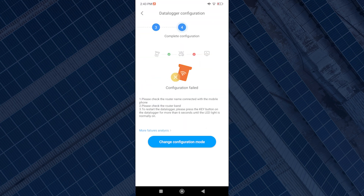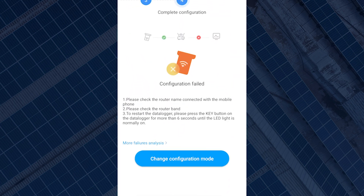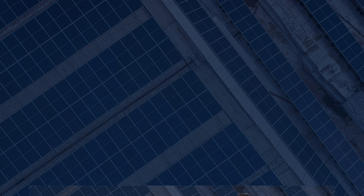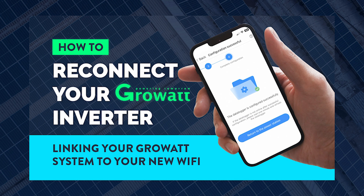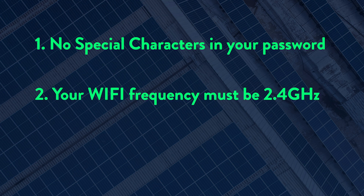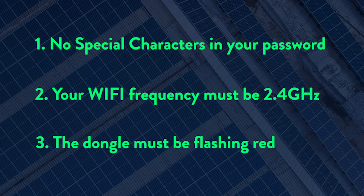If the configuration fails, you can attempt to reconnect the dongle again via the standard mode or you can try the hotspot method, which there is a full tutorial for over on our YouTube channel. The data logger should configure the first time if everything is correct, including having no special characters in your password, making sure your Wi-Fi frequency is 2.4 gigahertz, and making sure the dongle is flashing red. You might have to press the button on the dongle a couple of times to get it to flash red, but as long as it's flashing red, you can use the standard mode.